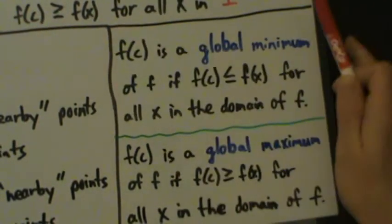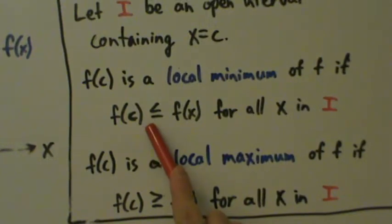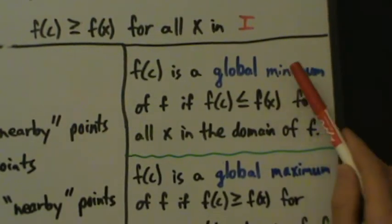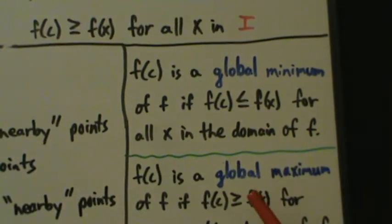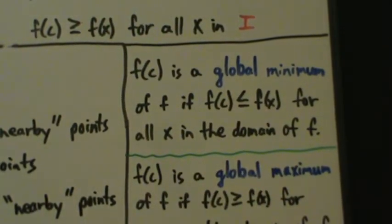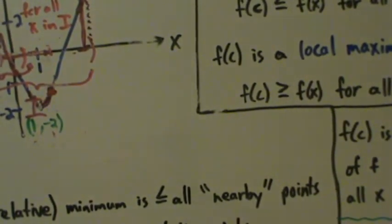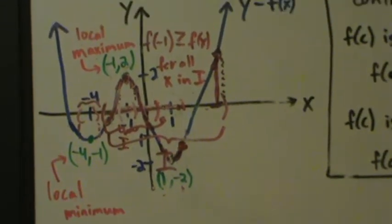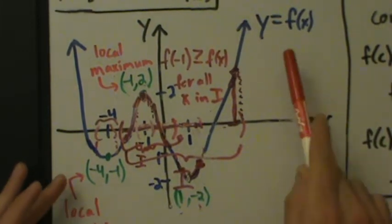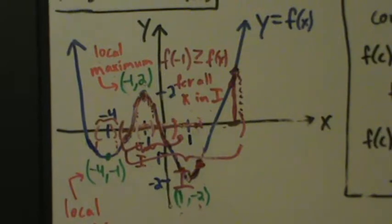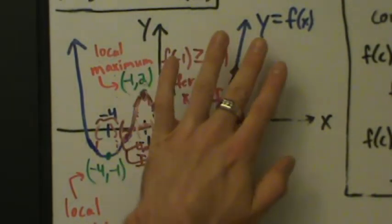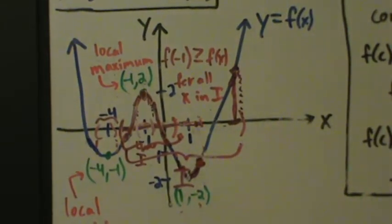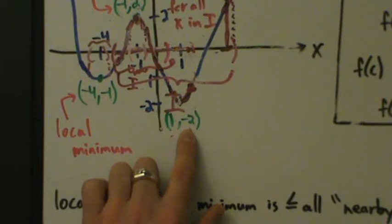What's important to remember is that these inequalities are not strict. For local min, it's less than or equal to. For local max, it's greater than or equal to. For global min, it's less than or equal to. For global max, it's greater than or equal to. They don't have to be strictly less than or strictly greater than — we'll talk more about that in later videos. When we talk about mins and maxes, we're talking about minimum or maximum values of the function f of x. The values are given by the y-coordinates.